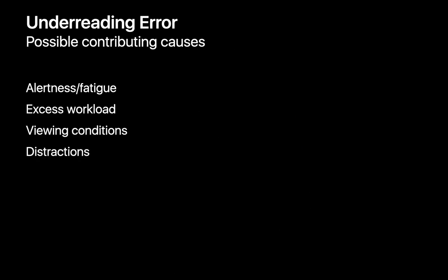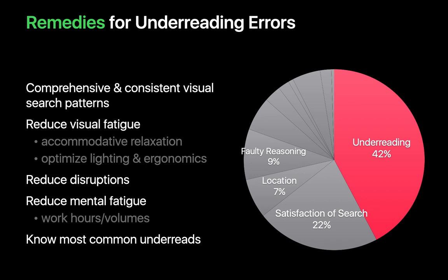Factors like fatigue, excessive workloads, suboptimal viewing conditions, and distractions are known to increase the likelihood of making an under-reading error. The best remedies for under-reading errors are to develop consistent and comprehensive visual search patterns, and to practice techniques to reduce visual fatigue, such as the 20-20-20 rule.